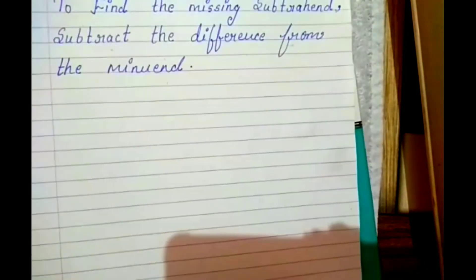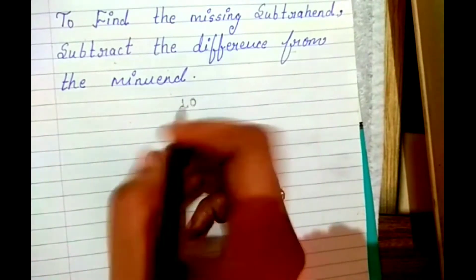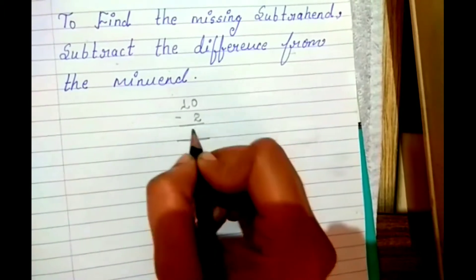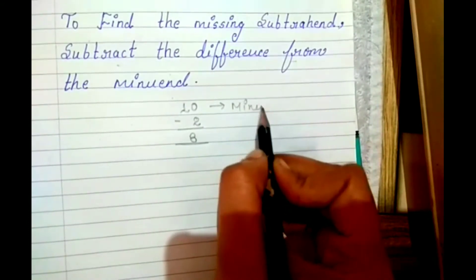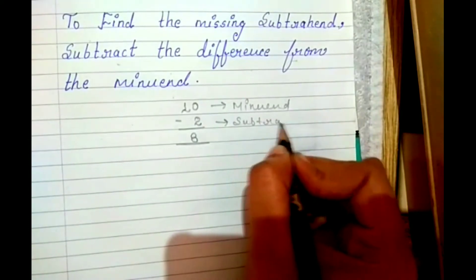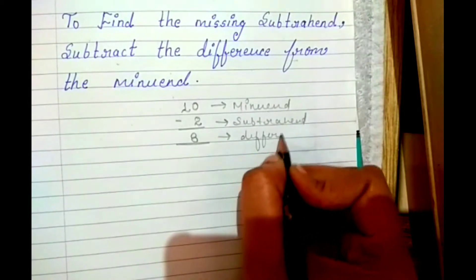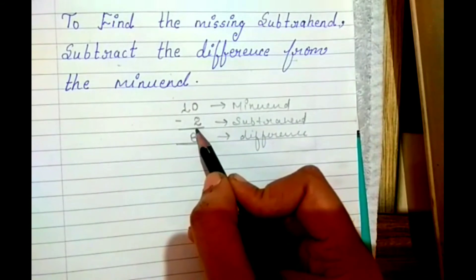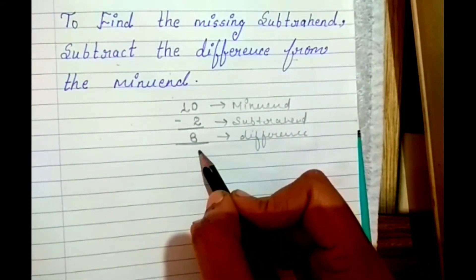सबसे पहले मैं कुछ चीज़ें clear कर दूँ। जैसे कि यहां 10 है और अपन ने उसमें से 2 minus किया तो 8 आ जाएगा। तो 10 क्या है - minuend. और 2 क्या है - subtrahend. और 8 क्या है - difference. That means जिस number में से minus करते हैं वो minuend, जिसको minus करते हैं वो subtrahend, और जो result आता है उसको difference बोलते हैं।